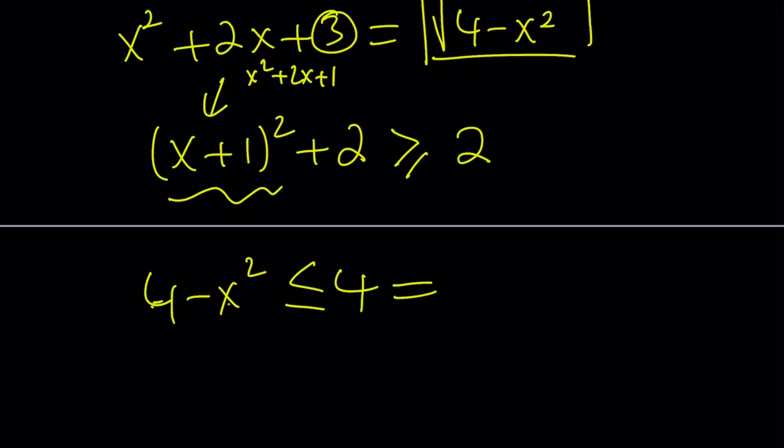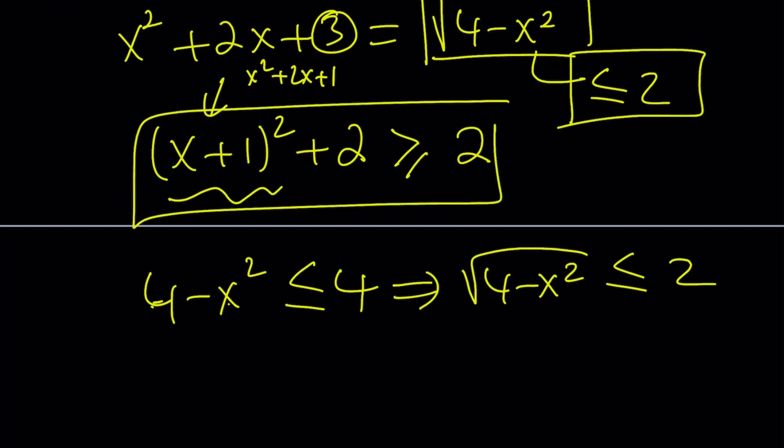So this means the square root of that, because both sides are positive, is going to be less than or equal to 2. So that's kind of interesting. We have something that is greater than or equal to 2, and we have something that is less than or equal to 2, and they're equal, so they both have to be 2.